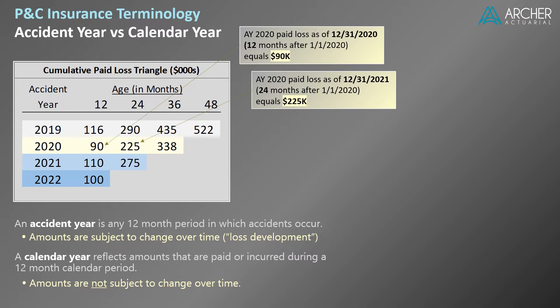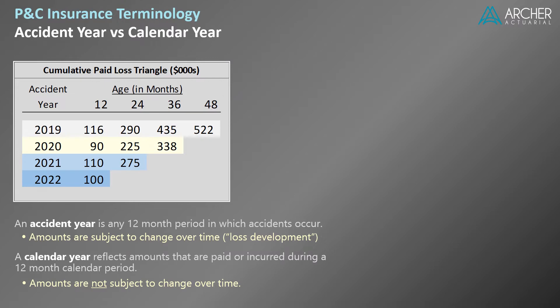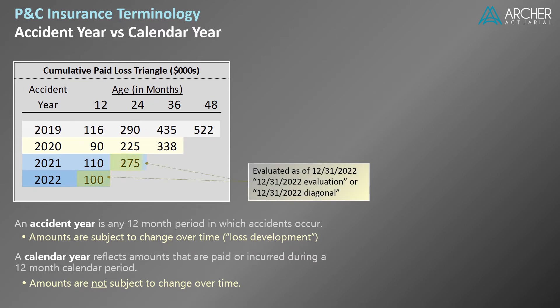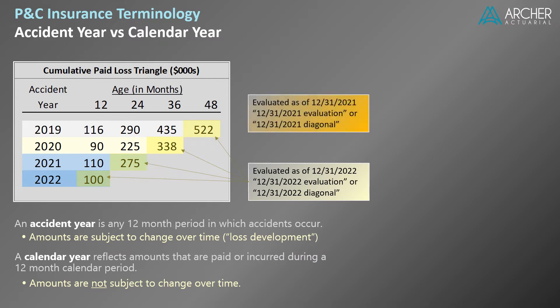We're nearly ready to use this paid loss triangle to calculate and compare accident year and calendar year losses. But first, I want to bring your attention to the paid loss data aligned along the diagonal of the triangle. The amounts along the rightmost diagonal share one thing in common: they are all evaluated at the same point in time. In this example, the evaluation date is 12-31-2022. We refer to this data as the 12-31-2022 evaluation or the 12-31-2022 diagonal. Similarly, the preceding diagonal represents cumulative paid loss evaluated as of 12-31-2021.